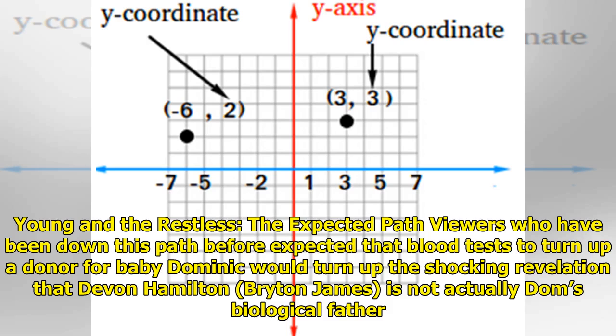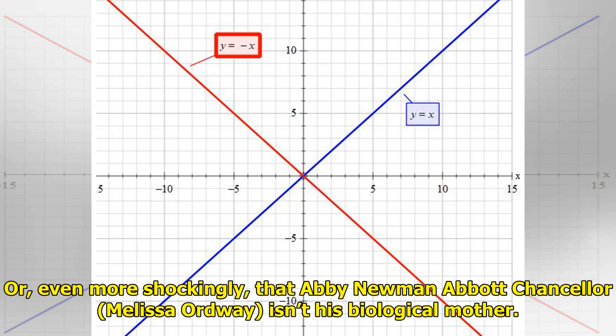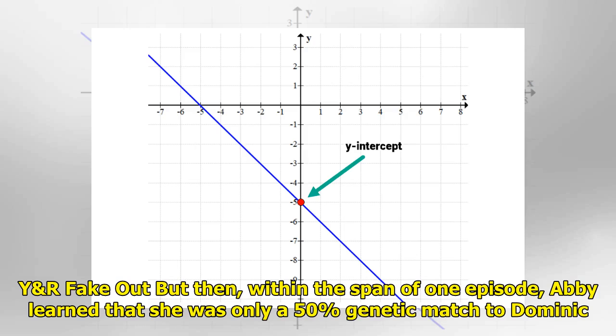Young and the Restless viewers who have been down this path before expected that blood tests to find a donor for baby Dominic would turn up the shocking revelation that Devon Hamilton is not actually Dom's biological father, or even more shockingly, that Abby Newman Abbott Chancellor isn't his biological mother.